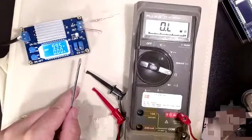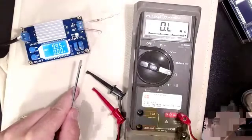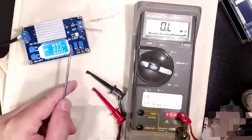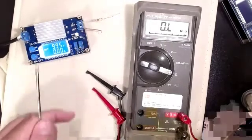I have that set to about an amp now. If you turn it counter-clockwise all the way you'll bring it down to zero amps and the red constant current light will turn on.